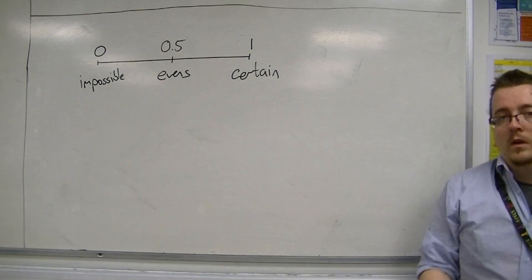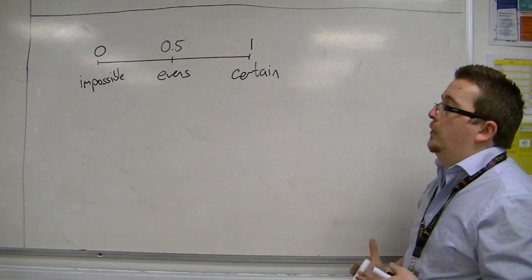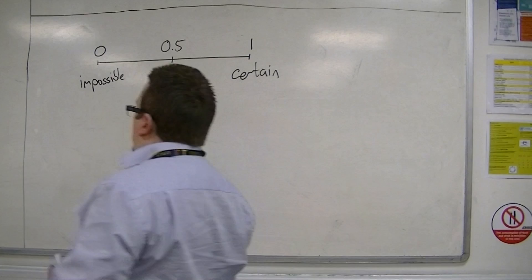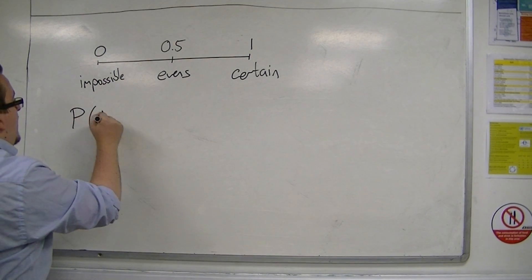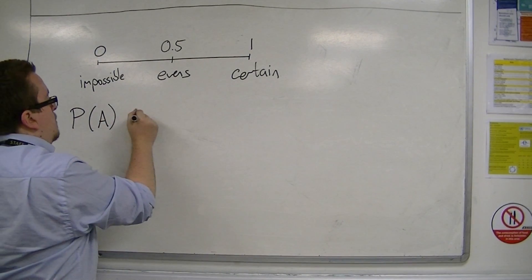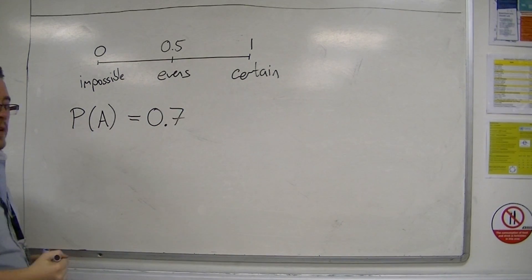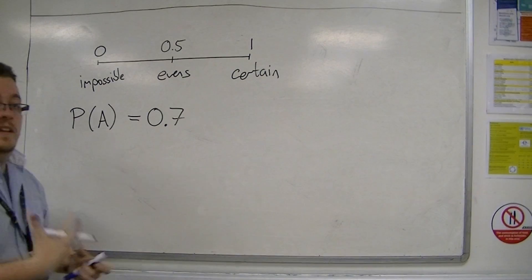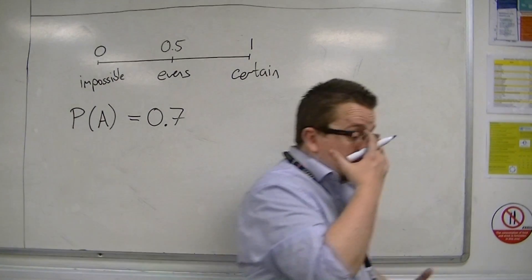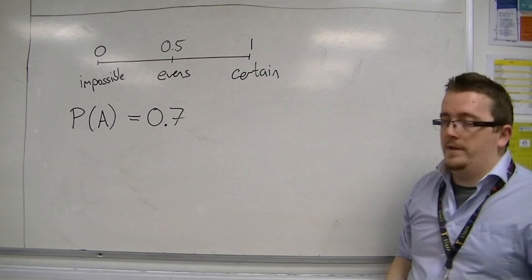So the notation that we like to use is the probability of A happening might be 0.7 for example, so it has a relatively likely chance of occurring because it's further along your number line.